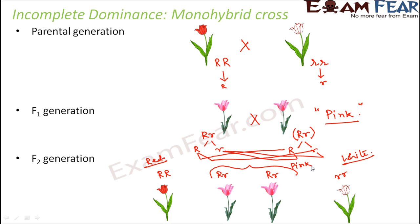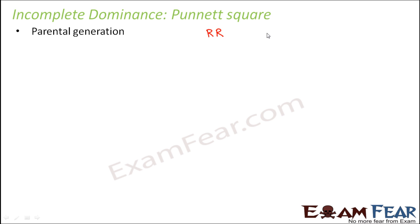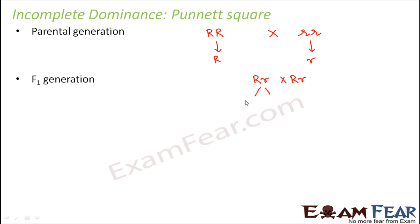The process of crossing remained the same, but here we saw that there was no complete dominance — red color did not dominate over white color. Instead, they blended together to form pink flowers. Now let us look at incomplete dominance from the Punnett square point of view. In the parental generation, homozygous red (capital R capital R) is crossed with homozygous white (small r small r), giving gametes capital R and small r respectively, producing the F1 generation as capital R small r.